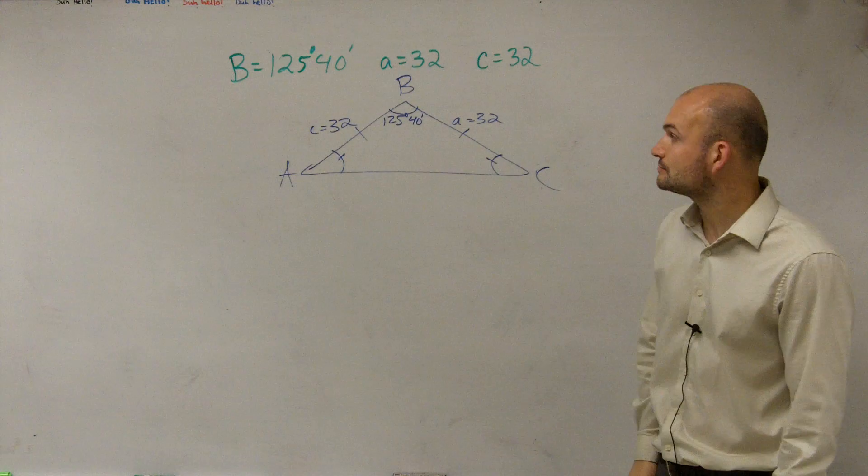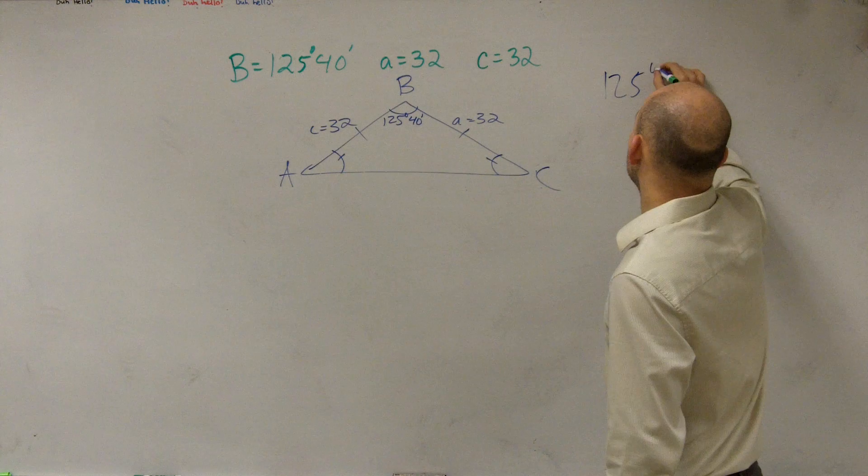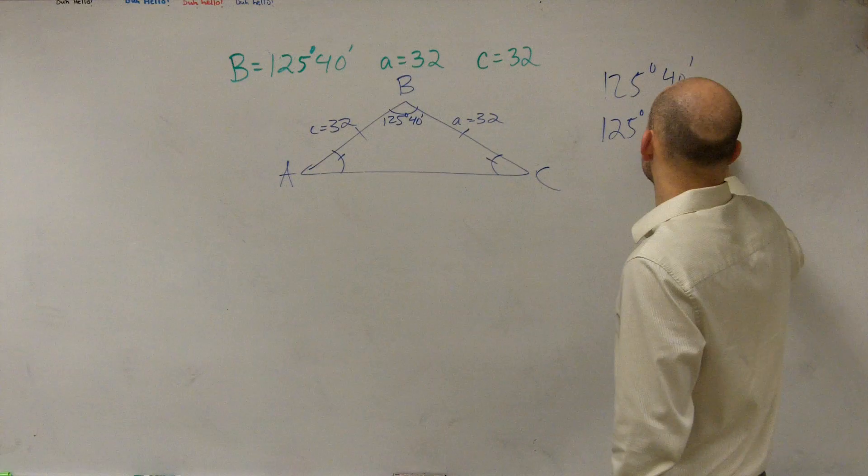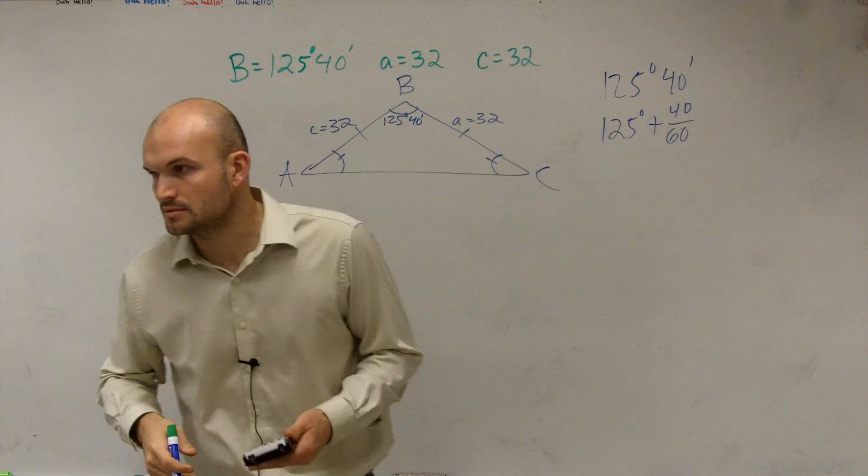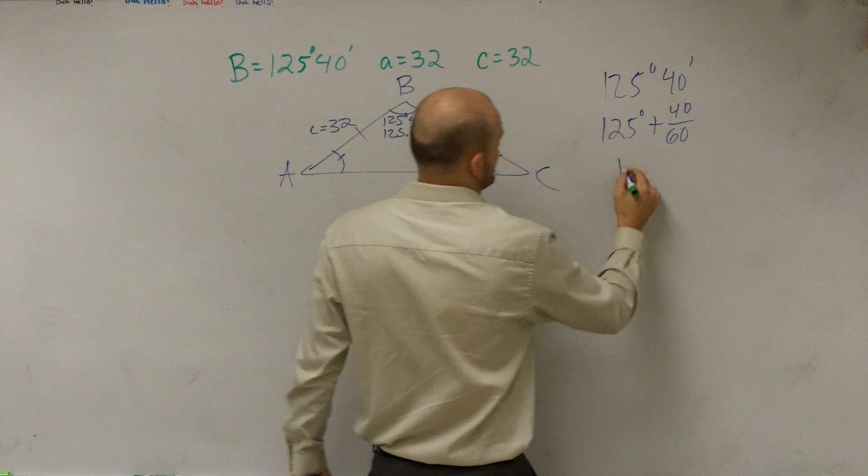So the first thing is we have 125 degrees and 40 minutes. Let's create. Let's go and put that into decimal form, first of all. So rather than being scared about the degrees and minutes, let's just convert that to 125 degrees plus 40 over 60, which is going to be 2 thirds, which would be 0.666. So round it off. So it's 125.66. And that's going to be repeating. That's going to be your decimal version.